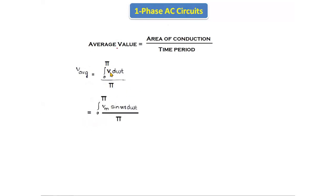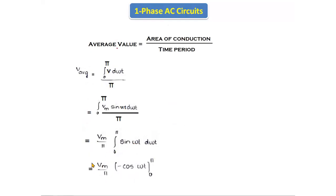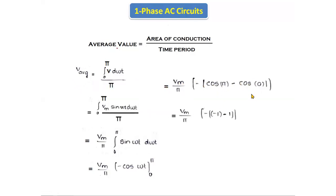The instantaneous voltage is V = Vm sin(ωt), so V_average = (Vm/π) × integral from 0 to π of sin(ωt) dωt. The integral of sin(ωt) is −cos(ωt), giving (Vm/π) × [−cos(ωt)] from 0 to π. Applying the limits: −cos(π) − (−cos(0)) = −(−1) − (−1) = 1 + 1 = 2, so we get (Vm/π) × 2.